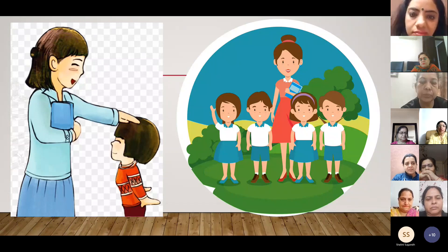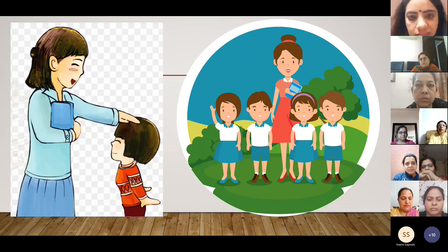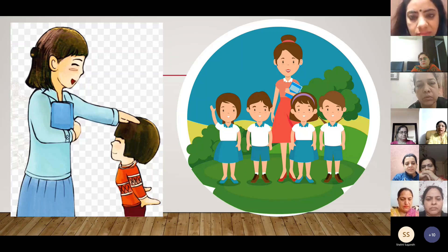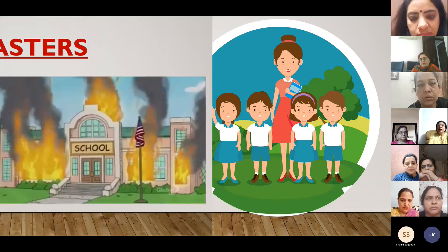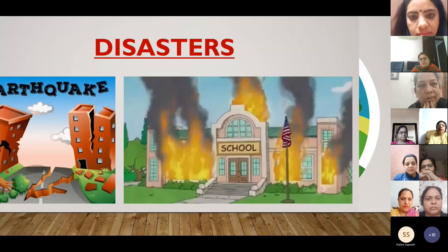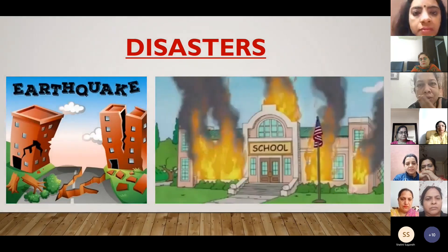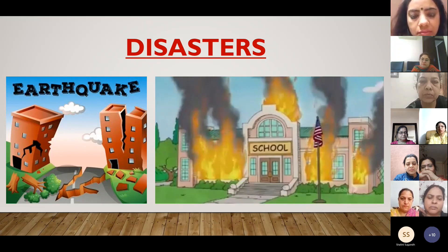These safety measures include exit points at both levels, safety kits availability in school, evacuation, assembly, and emergency procedures. As you all know, disasters like earthquakes and fire outbreaks are unpredictable, so we being responsible teachers need to expertise in evacuating the classrooms to save children from becoming the victims of these disasters.